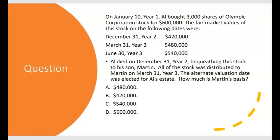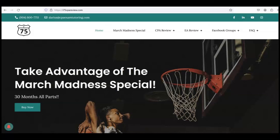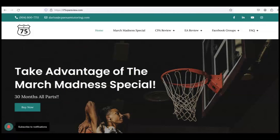How about this: on January 10, Year 1, Al bought 3,000 shares of Olympic Corp stock for $600,000. Al died on December 31, Year 2, bequeathing the stock to his son Martin. All of the stock was distributed to Martin on March 31, Year 3. The alternate valuation date was elected for Al's estate — very important, they'll have to tell you that. How much is Martin's basis? If you think you know, leave the answer in the comments. Remember to like and subscribe — it really helps the channel. For more help with REG or any part of the CPA exam, go to i75cpareview.com and get yourself on i-75 with me, Darius Clark, because the right teacher makes all the difference.